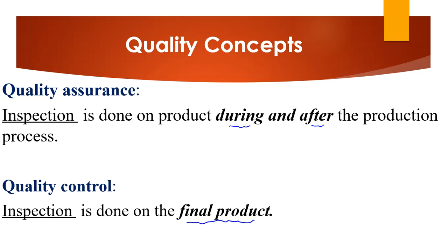To recap: quality assurance is done during and after the production process, but quality control is only done on the final product — so we control the final product at the end.